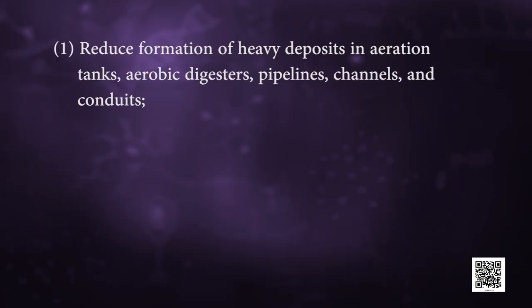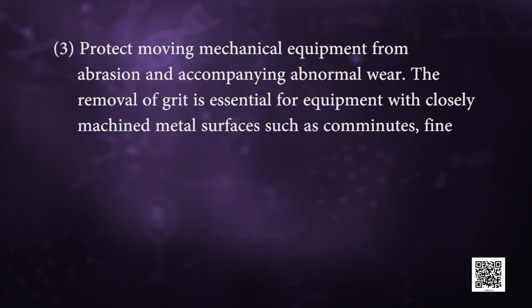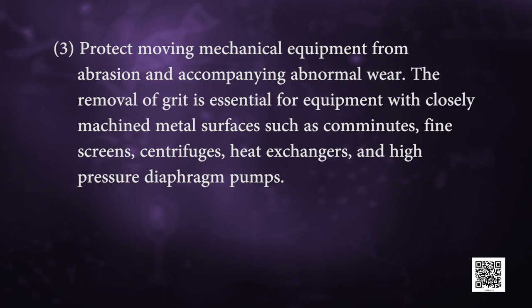Pre-treatment may include a sand or grit channel or chamber where the velocity of the incoming sewage is adjusted to allow the settlement of sand and grit. Grit removal is necessary: first, to reduce formation of heavy deposits in aeration tanks, aerobic digesters, pipelines and conduits; second, to reduce the frequency of digester cleaning caused by excessive accumulation of grit; third, to protect moving mechanical equipment from abrasion and abnormal wear. Grit removal is also essential for equipment with closely machined metal surfaces such as comminutors, fine screens, centrifuges, heat exchangers and high pressure diaphragm pumps.